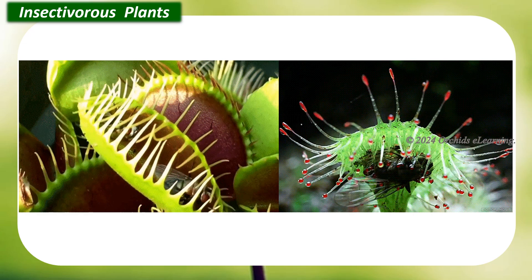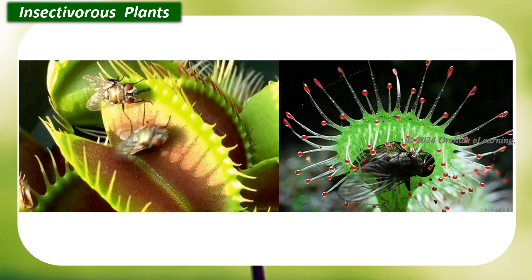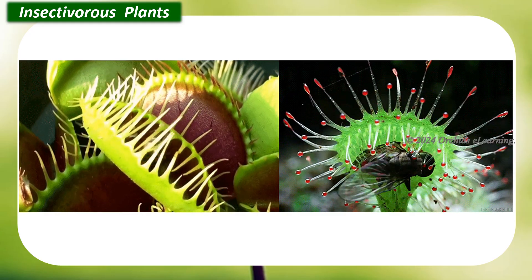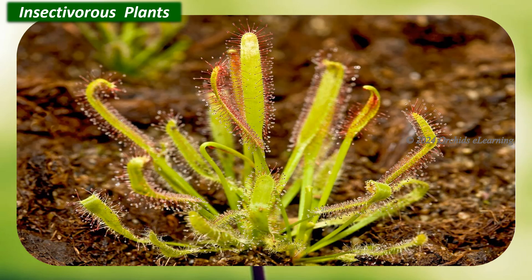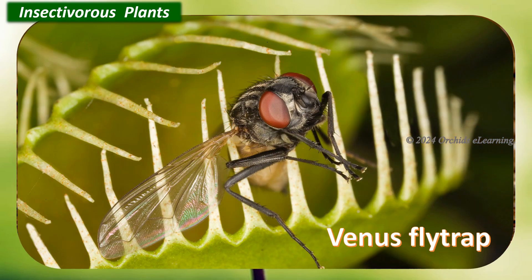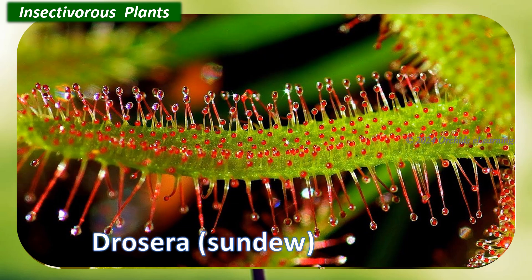Insectivorous plants are ones that derive some or most of their nutrients by trapping and consuming animals, mainly insects. These plants mostly grow in places where the soil is deficient in certain nutrients, particularly nitrogen. Hence they need to obtain the required nutrients from other sources. Examples are the Venus flytrap, pitcher plant, Drosera, and bladderwort.